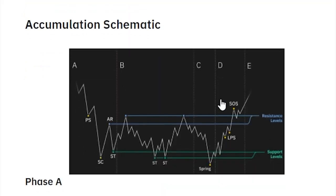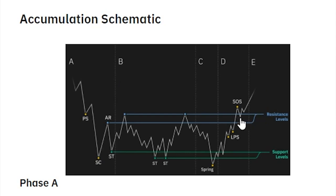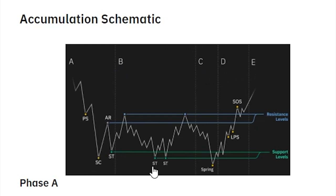Next, let's talk about the Wyckoff schematics — definitely the most popular part of Wyckoff's work. You've probably been seeing this chart around for the last month or so. These models break down the accumulation and distribution phases into smaller sections, which are divided into five different phases, A through E, along with different events which happen during these phases.